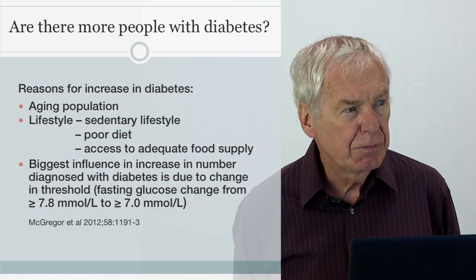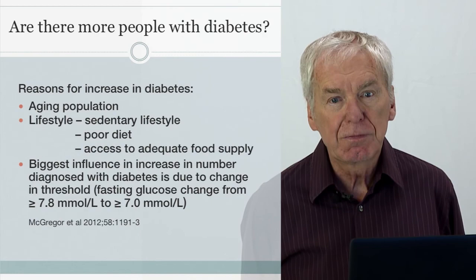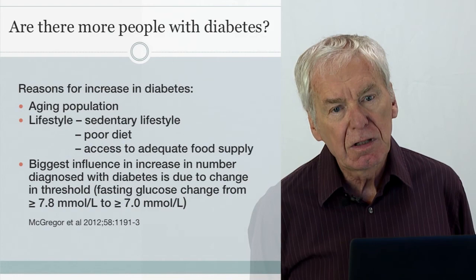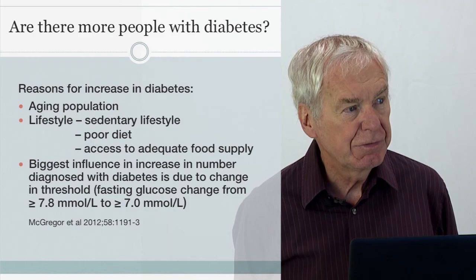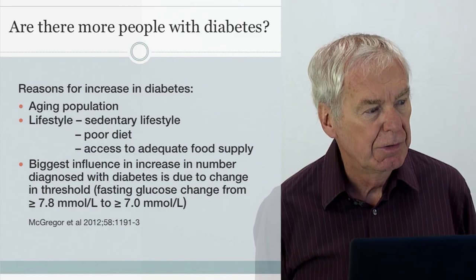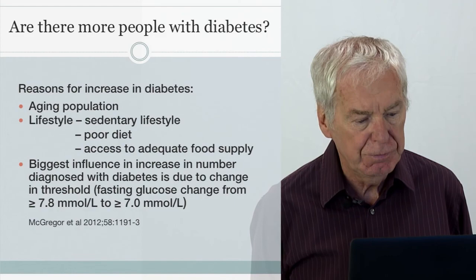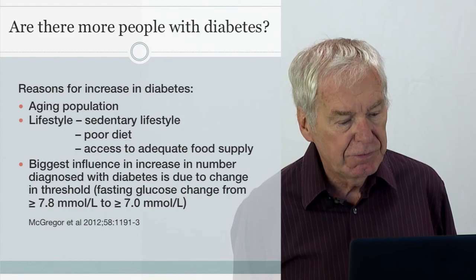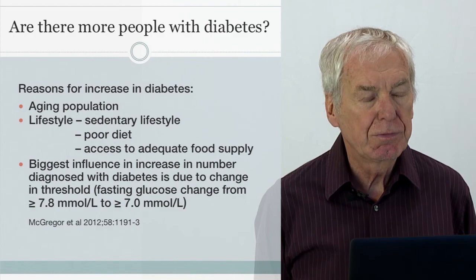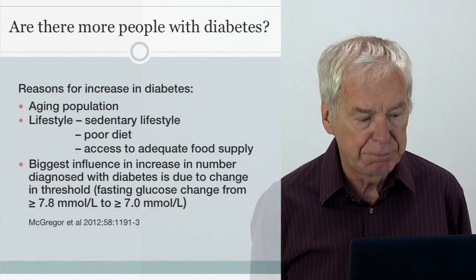Are there more people with diabetes? The standard reasons given are an aging population and a change in lifestyle — we're much more sedentary, sitting by the TV with a remote instead of walking to change channels. We have a poorer diet, eating a lot of carbohydrates and fast food. For indigenous populations, increased access to an adequate food supply is postulated as the reason for large increases in diabetics found in those communities.